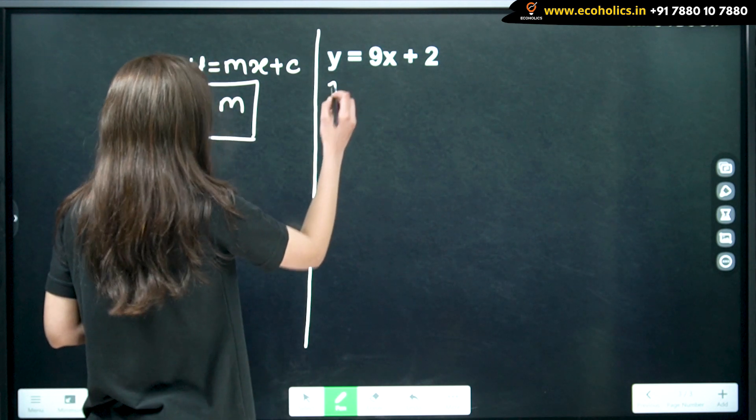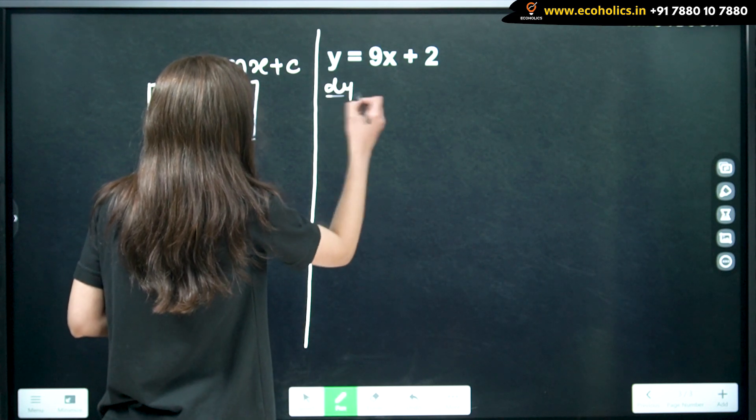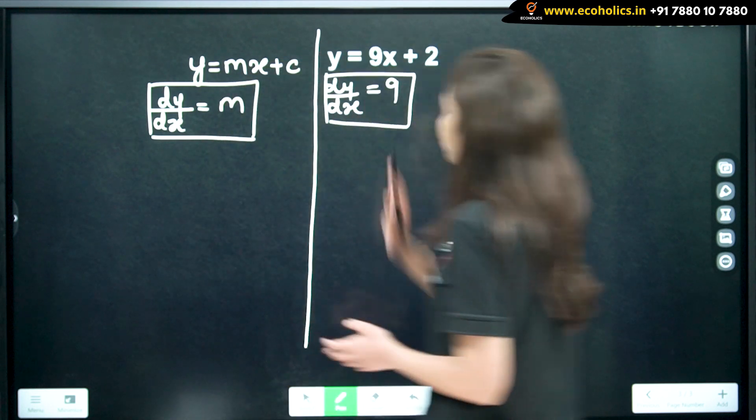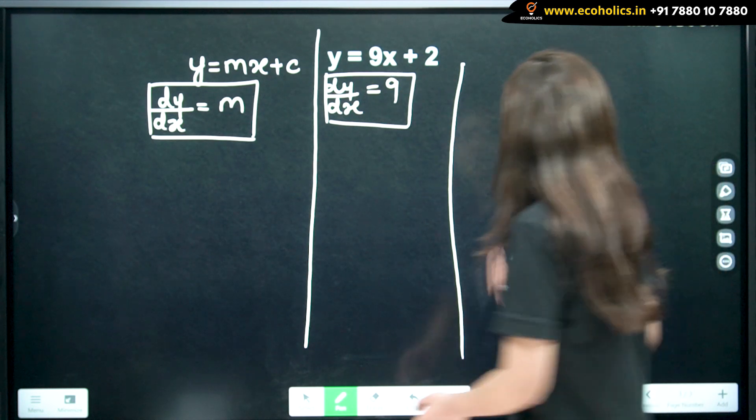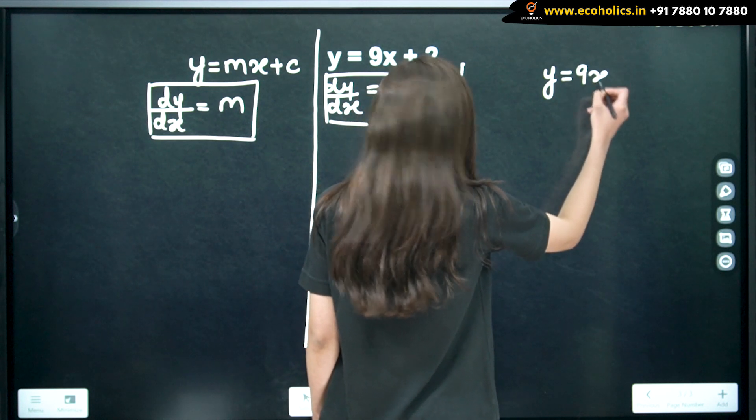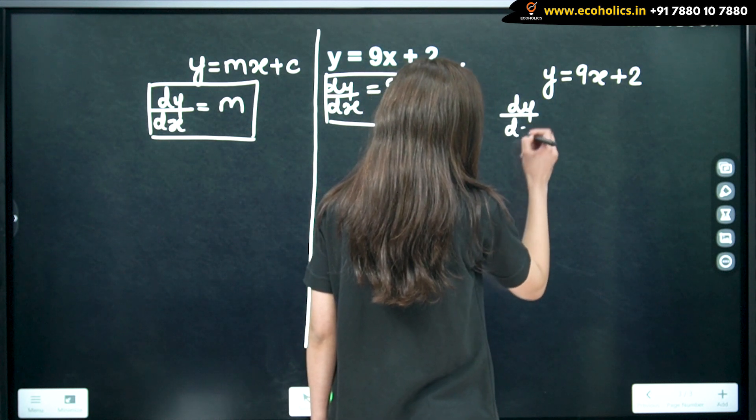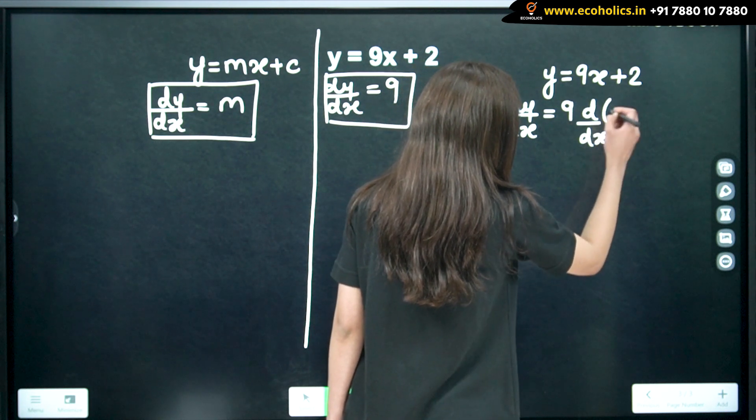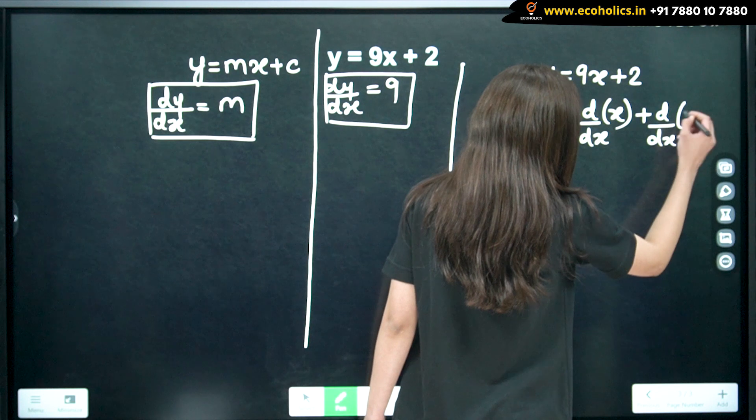So, we can simply see that if you know the rule, you can just write dy by dx is nothing but 9. But let's see if you don't know this rule, how are we going to calculate? So, when our y is equal to 9x plus 2, dy by dx will be 9 plus differentiation of 2.